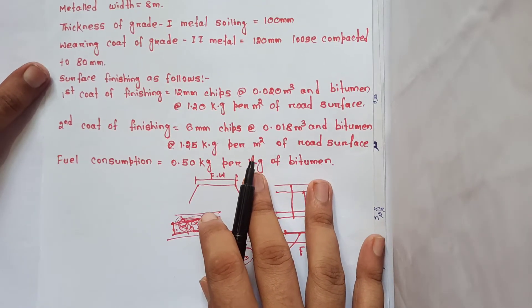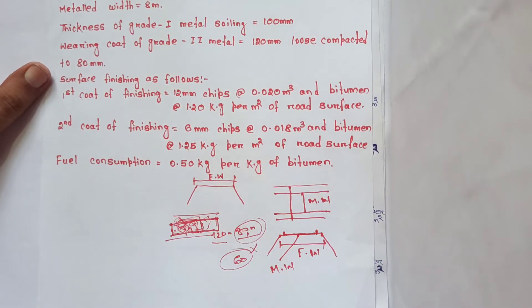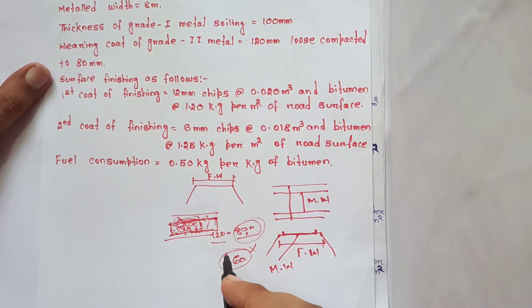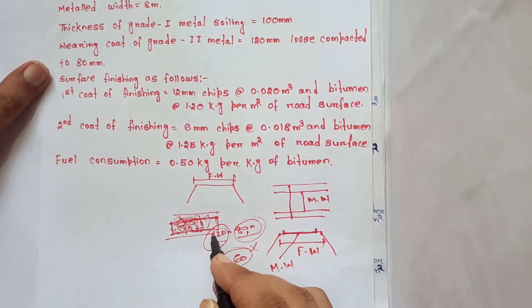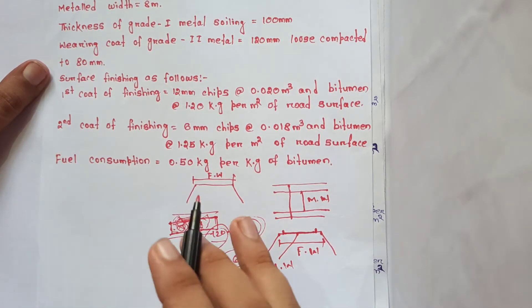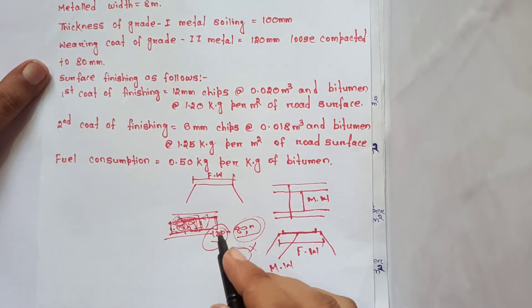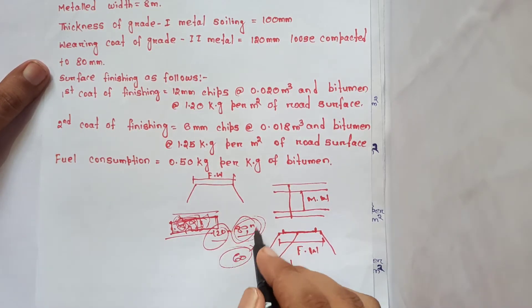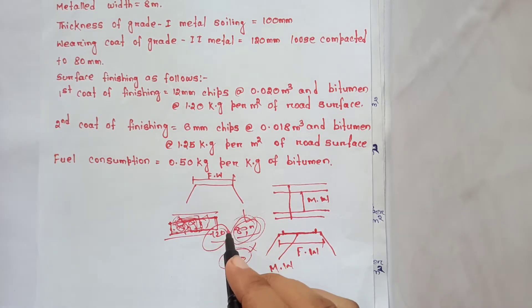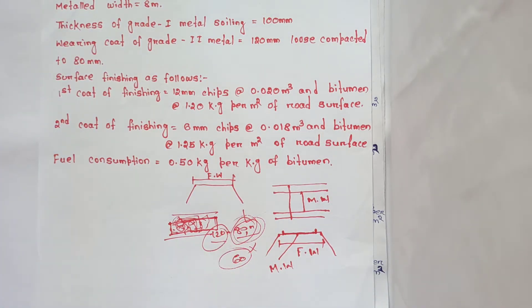The thickness of Grade 2 metal wearing coat is 120 mm loose, compacted to 80 mm.